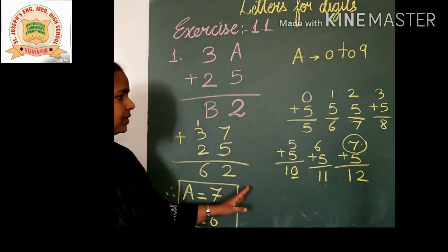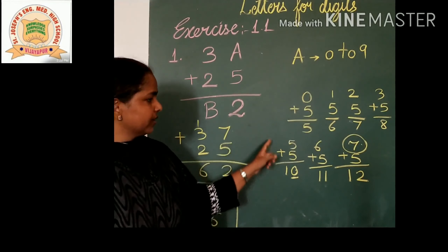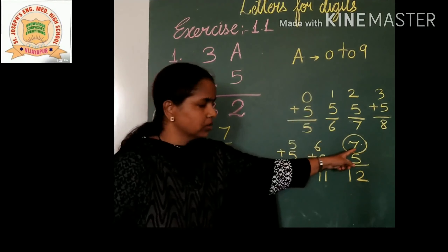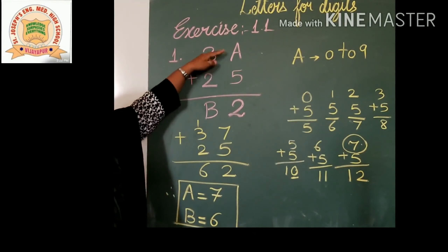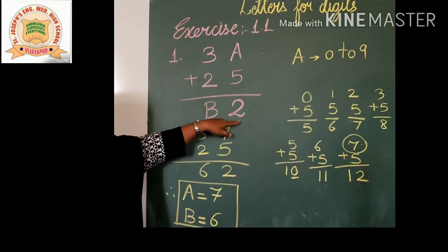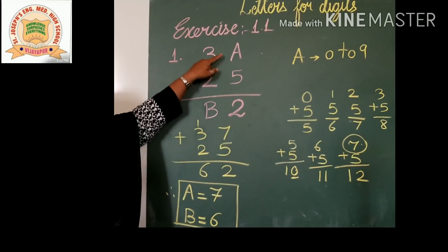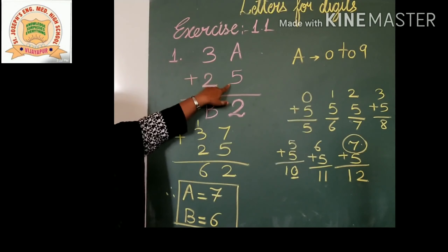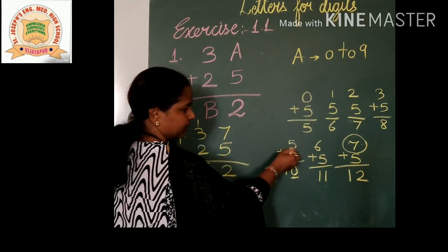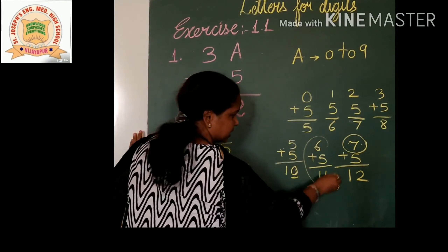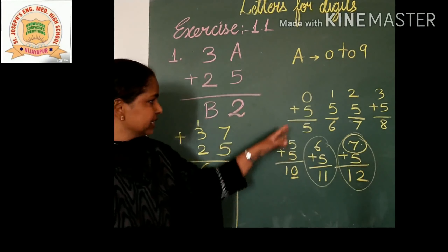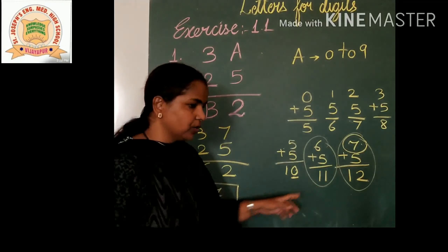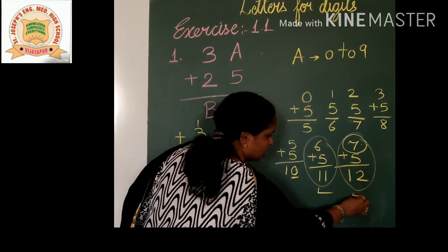See children, in this first problem we tried numbers from 0 to 7. But sometimes we have to use logic also. Logically, A plus 5 gives a unit digit of 2, so the value of A must be greater than 5 — meaning 6 or 7. So instead of doing all these steps, we can directly check just these 2 values to solve this type of problem.